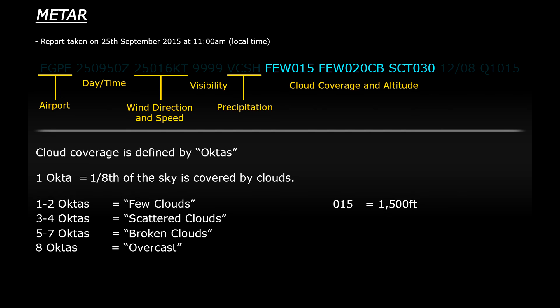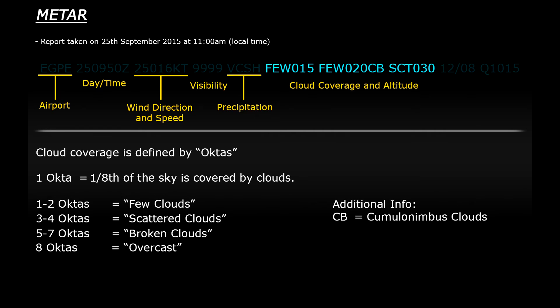The number on the end there reads like a flight level. The next layer is FEW020 CB — so there's another layer of clouds at 2000 feet and the CB advises that the type of clouds are cumulonimbus, which can form into heavy rain showers, thunderstorms and other forms of strong weather which can impact flight. So as a pilot you would want to be aware and stay clear of those types of clouds. And then lastly there's a layer of scattered clouds at 3000 feet.